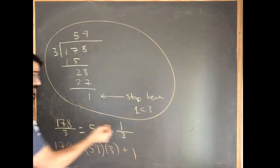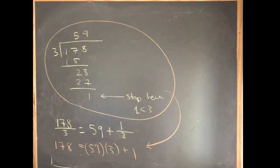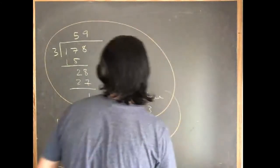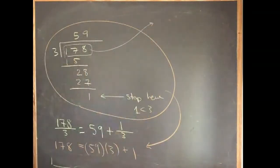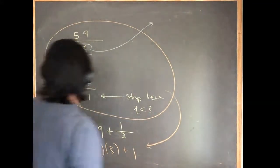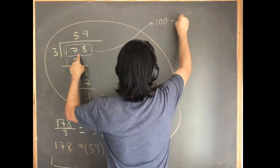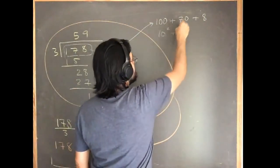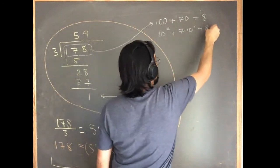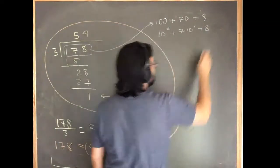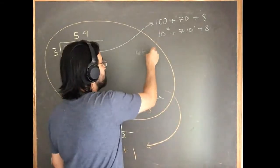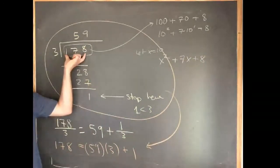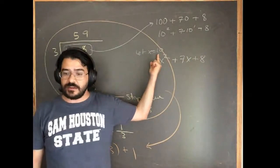It's not too surprising that this works for polynomials, because a number like 178 can be thought of as a polynomial in disguise. You can write 178 as 1×10² + 7×10¹ + 8×10⁰. If we let x=10, this becomes x²+7x+8 — a polynomial! So polynomial long division moves us out of base 10 into a system with an arbitrary x.